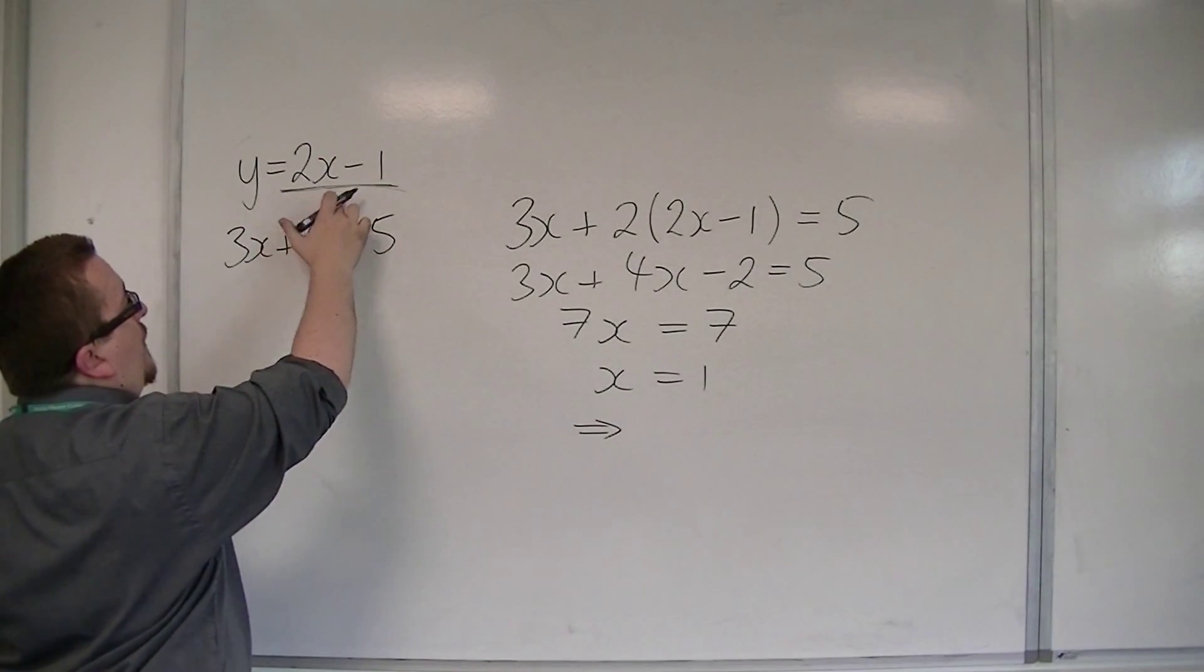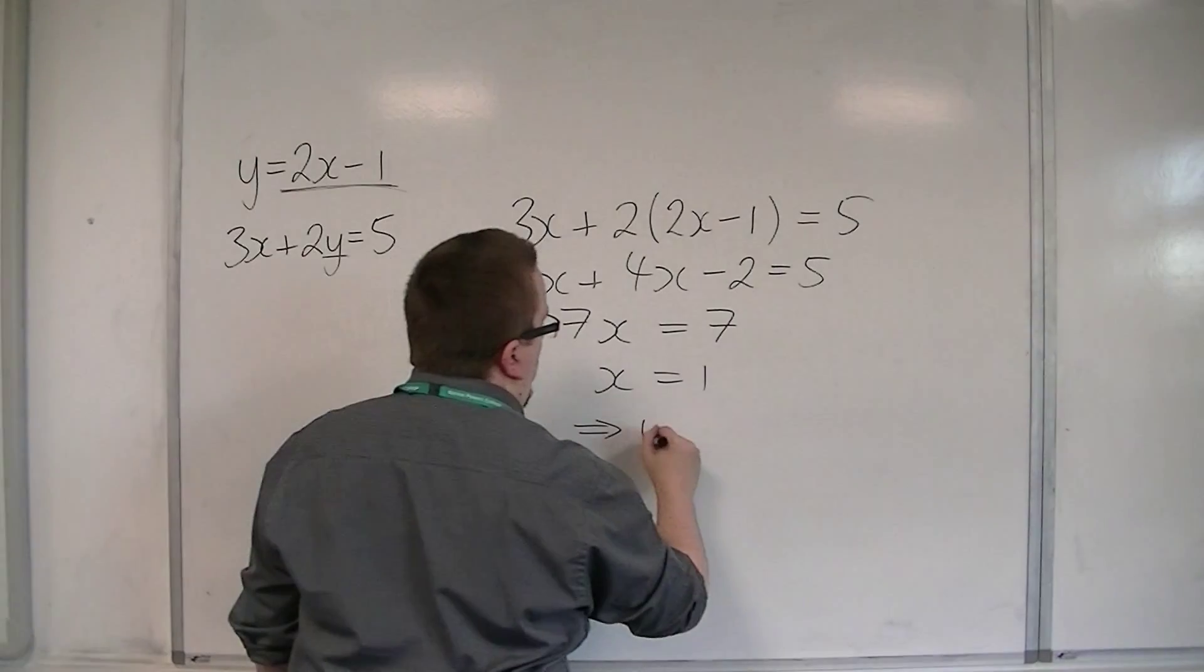So in that one, 2 lots of 1, take away 1 is just 1. So y is equal to 1.